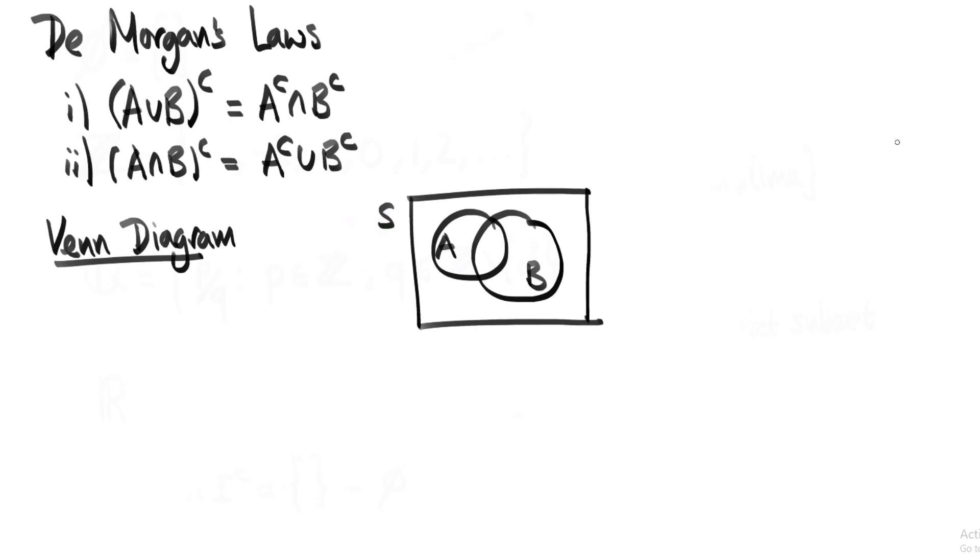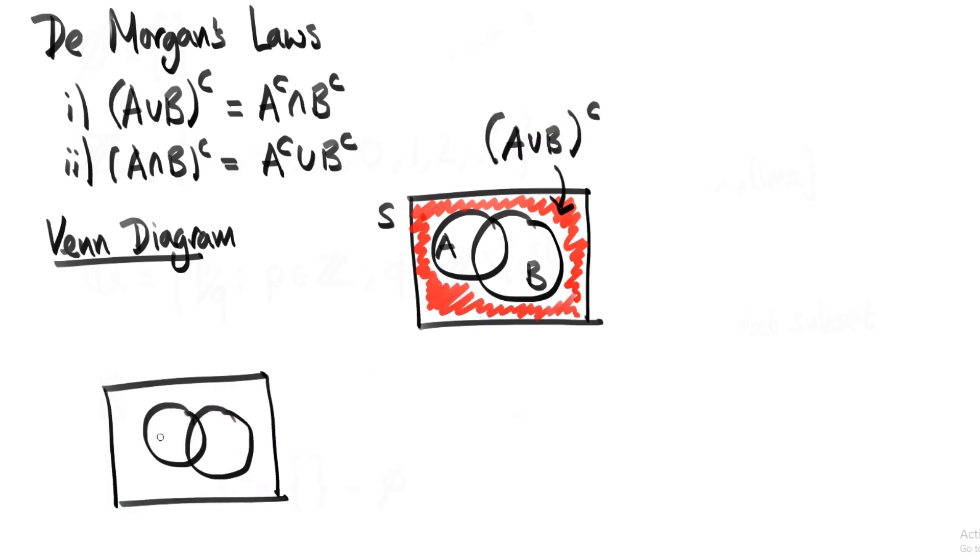Now A union B complement is everything that's not in the union of A and B. So that's the area inside S, but outside the two circles representing A and B. That's the red shaded area. OK, so that's what the left hand side of the equality looks like.